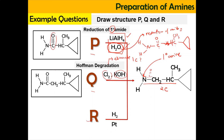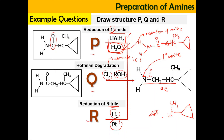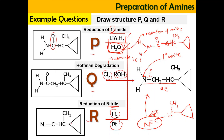For structure R: it uses hydrogen in the presence of platinum catalyst, which tells us it's a reduction of a nitrile compound. The nitrile group (C≡N) must be at the end of the chain. So the structure has C, CH3, and the substituents with C≡N at the end. When the nitrile is reduced, the C≡N becomes CH2-NH2. So the structure gives the expected primary amine product.